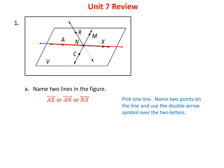So for example, I could name it AX, AN, or NX, or go backwards on each of those. Now if I want a different line, pick a different line going through C, N, and M. Notice I can name CM, CN, and NM. There's even a third line going through RN, and I could name that RN or NR.